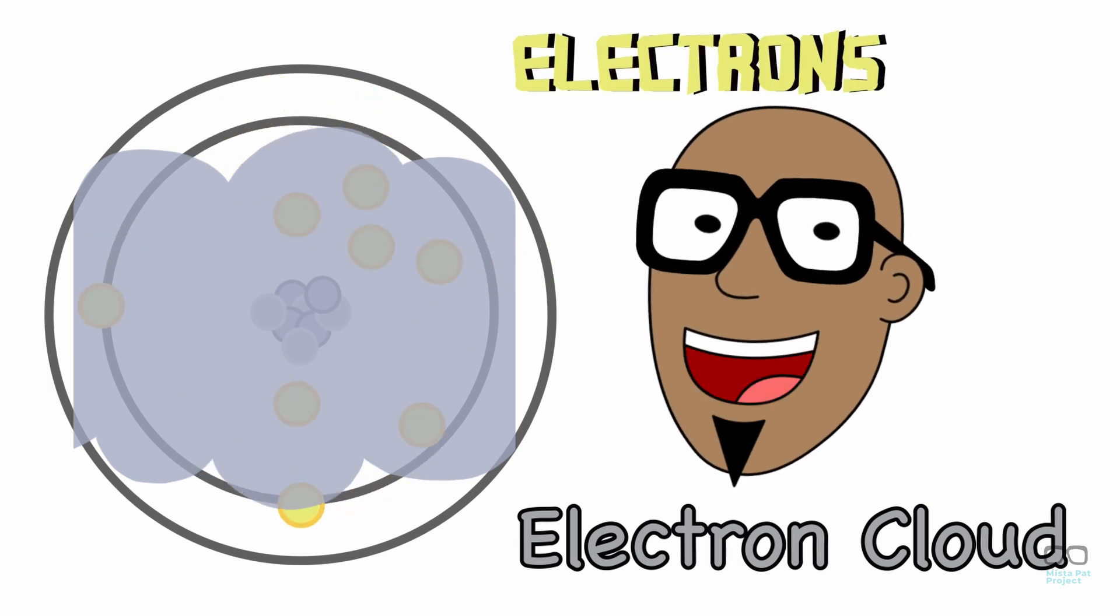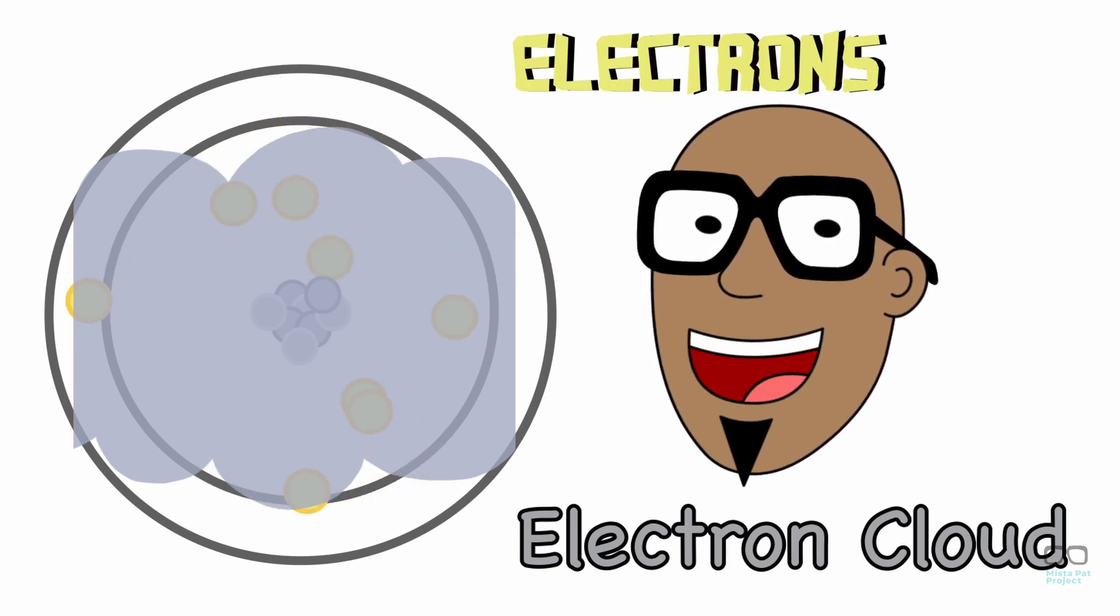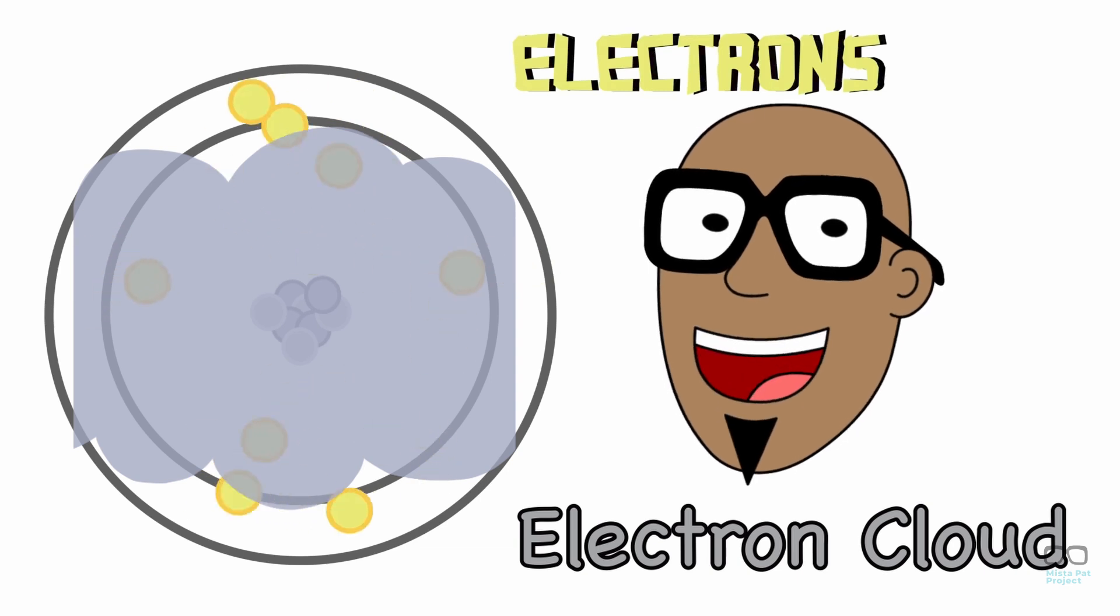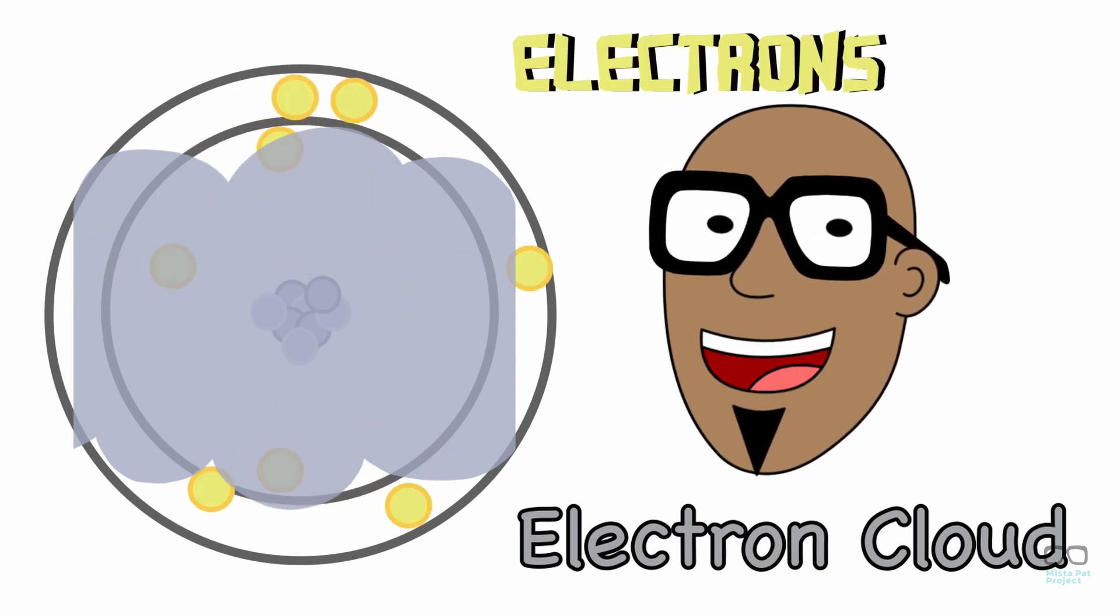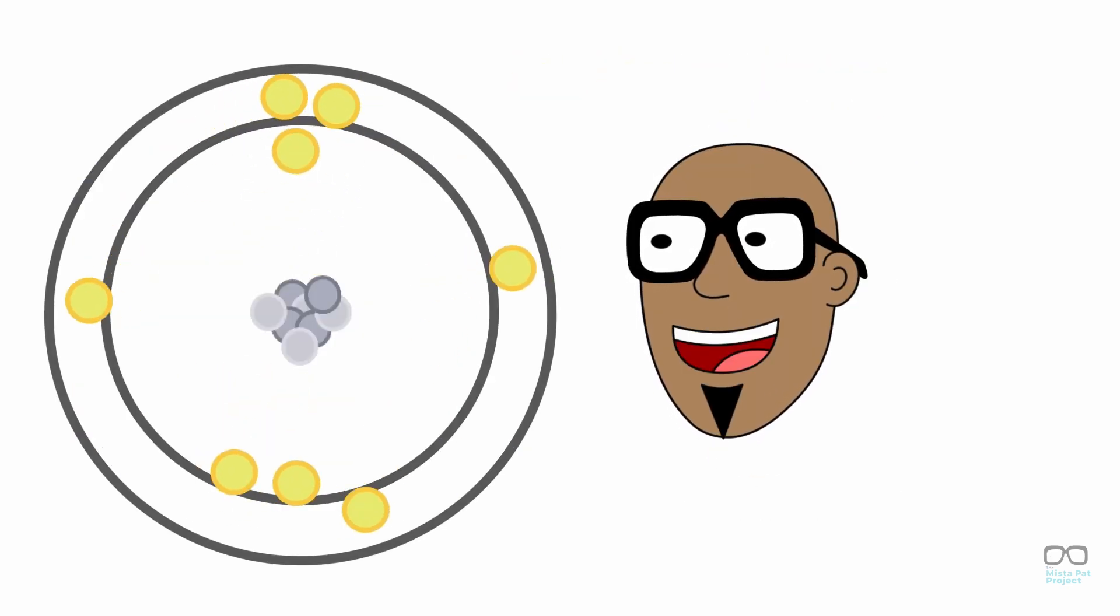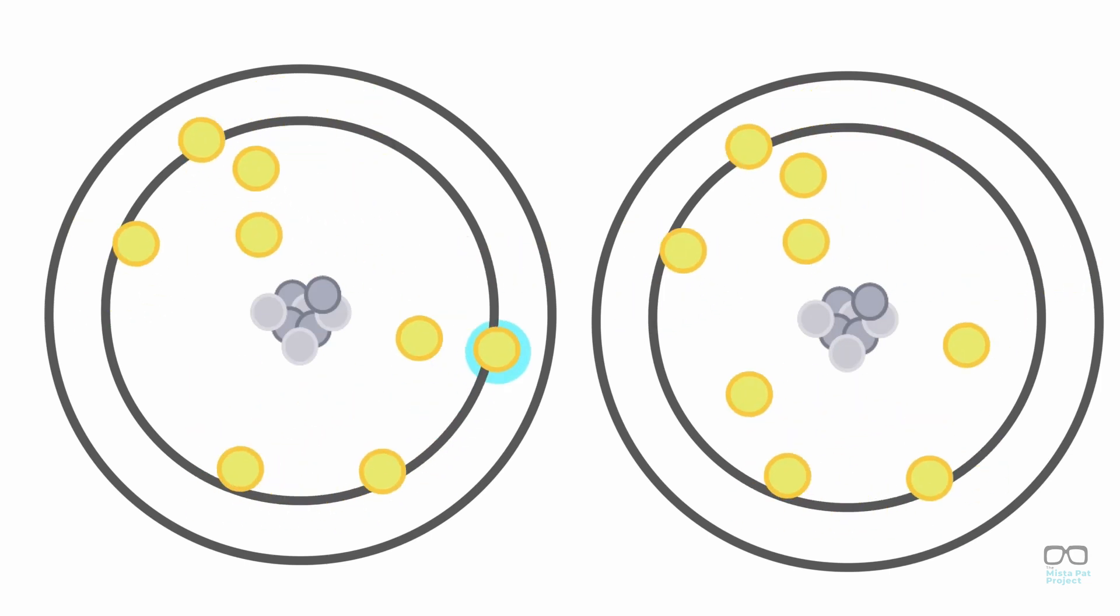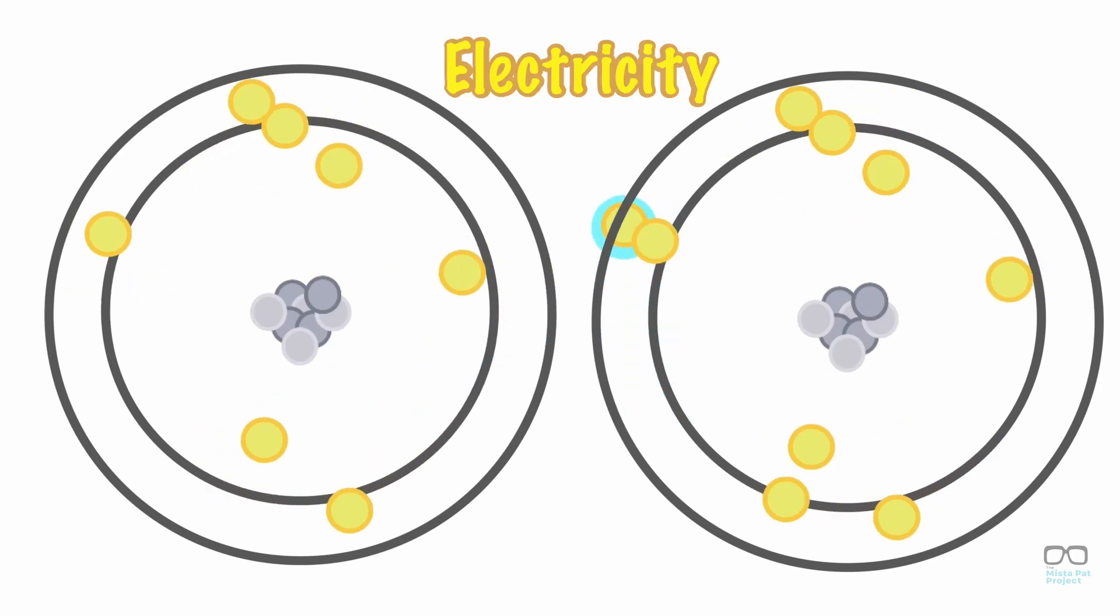Unlike planets orbiting around the sun, electrons orbit an atom's nucleus by jumping between different spots within the electron cloud. Man, I wish I could move like that. Atoms with the same number of protons and electrons have a neutral charge. But electrons move around so much, they're actually able to transfer from one atom to another in the form of electricity.